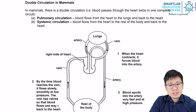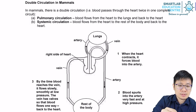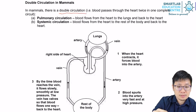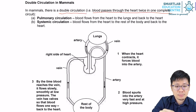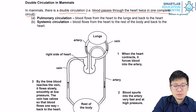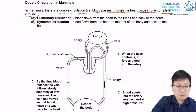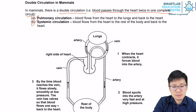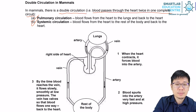In summary, in mammals there is a double circulation — this is very important for your exam, make sure you know this. The definition you need to remember: the two circulations are pulmonary and systemic circulation. Pulmonary circulation is blood flowing from the heart to the lungs and back to the heart. Systemic circulation is blood flowing from the heart to the rest of the body and back to the heart.